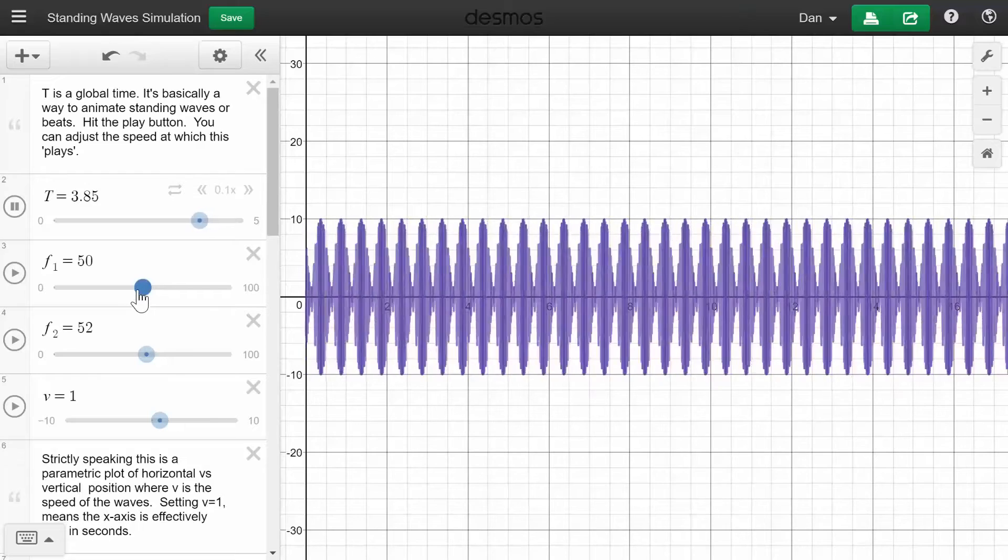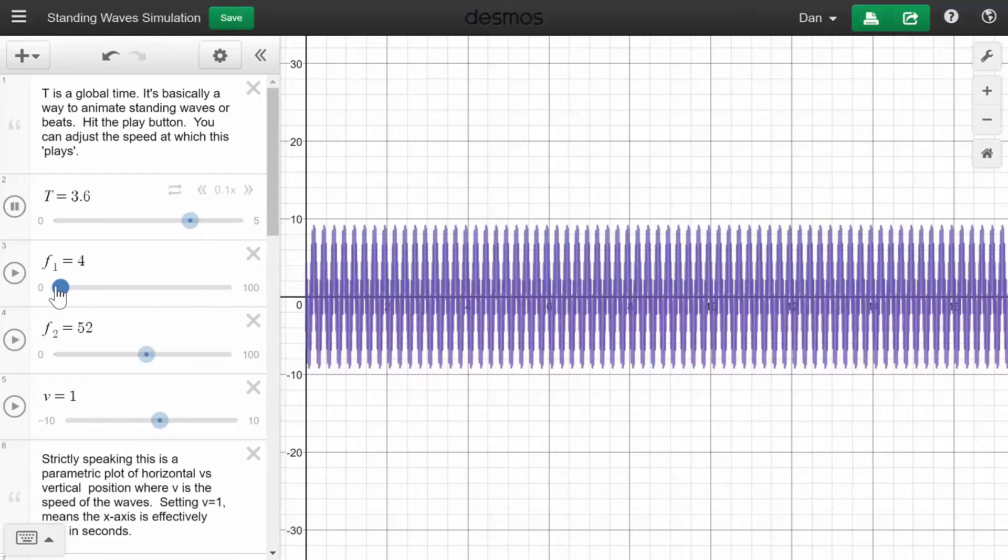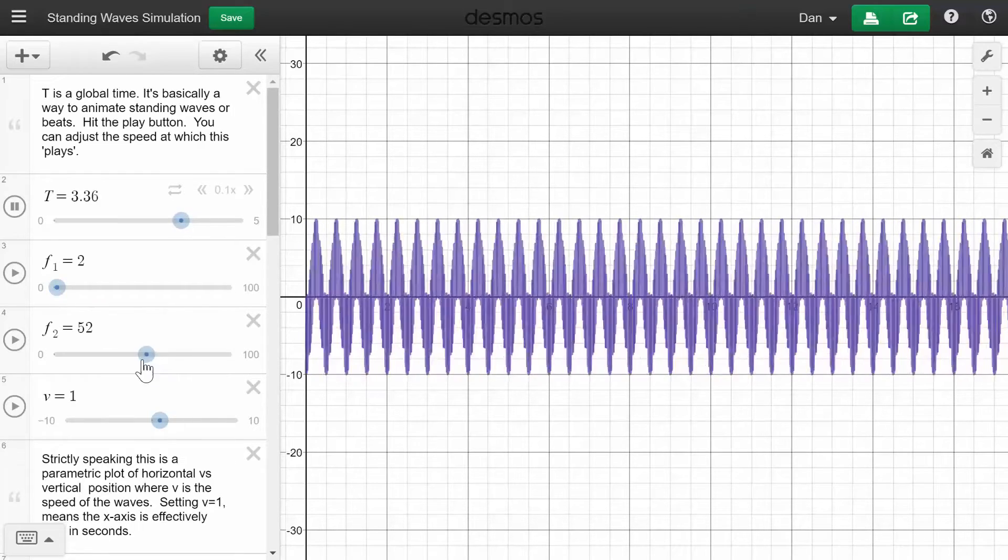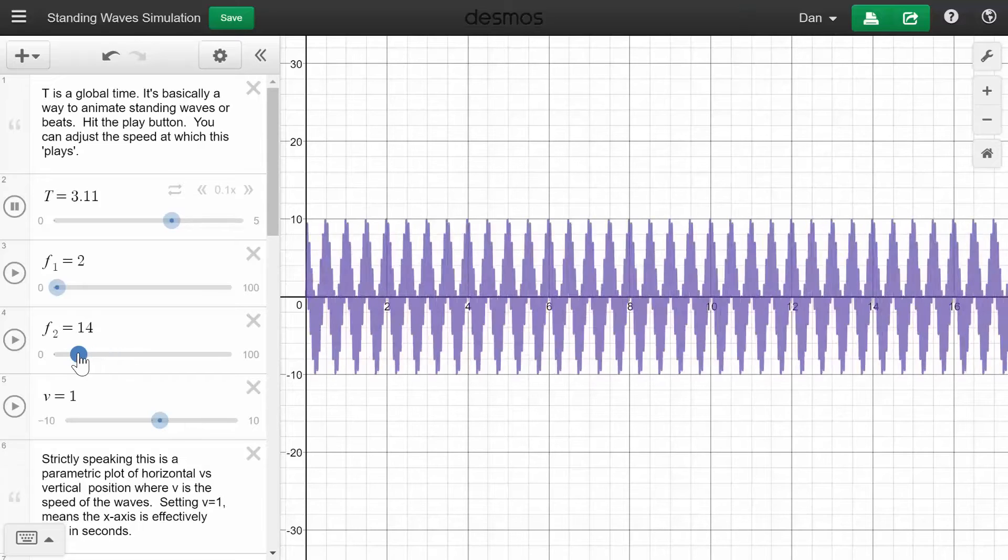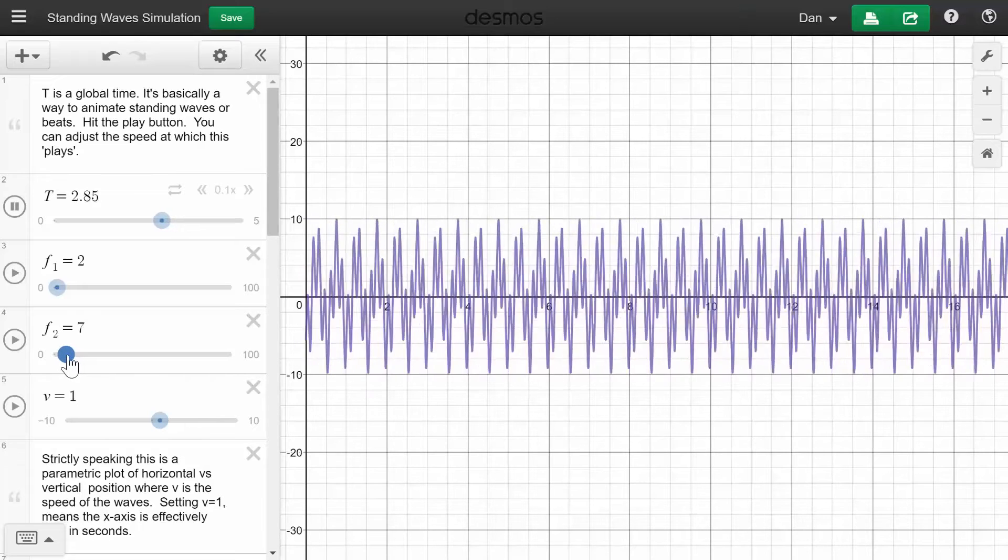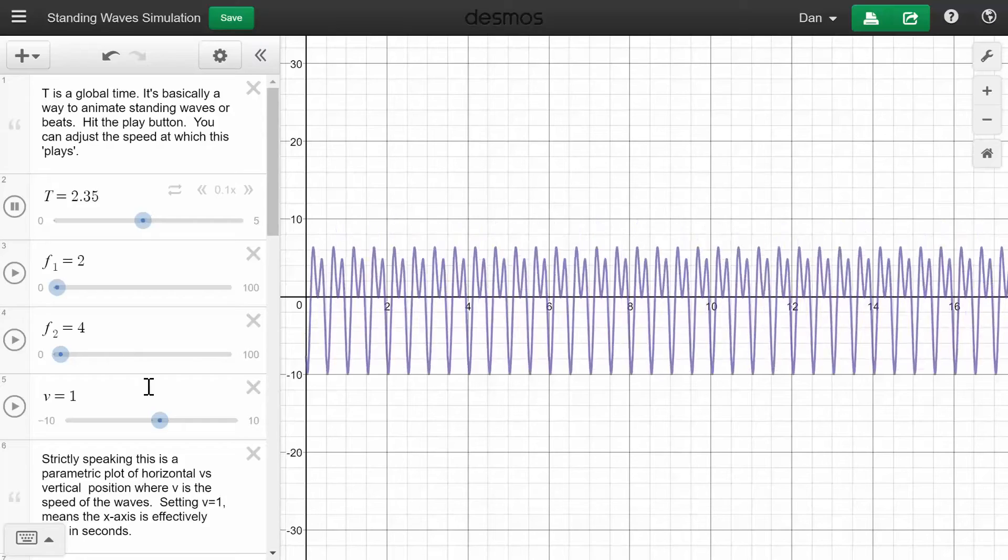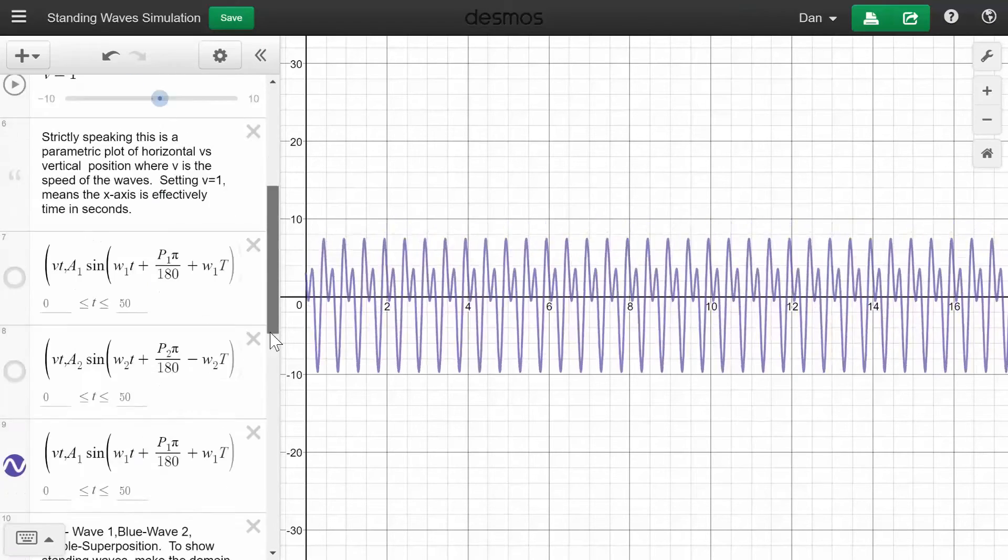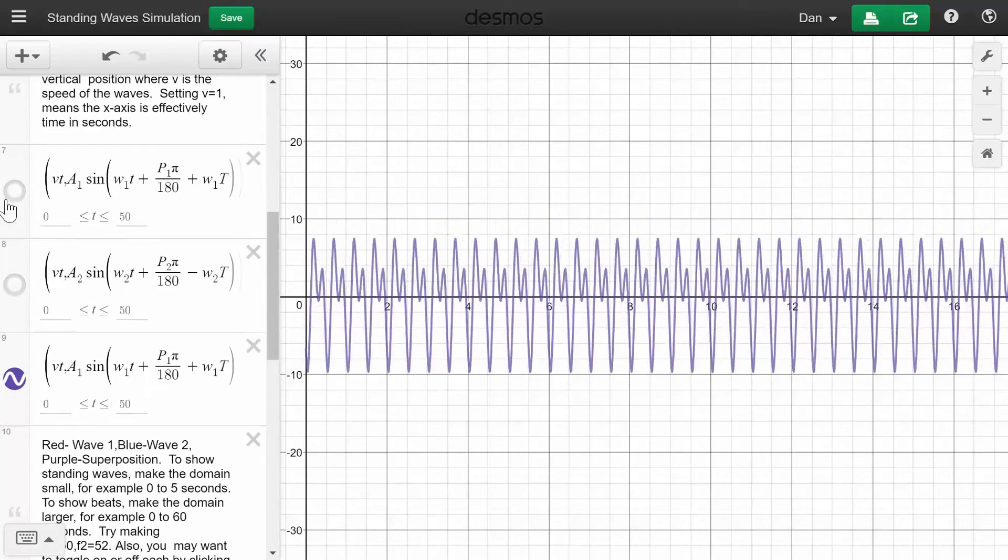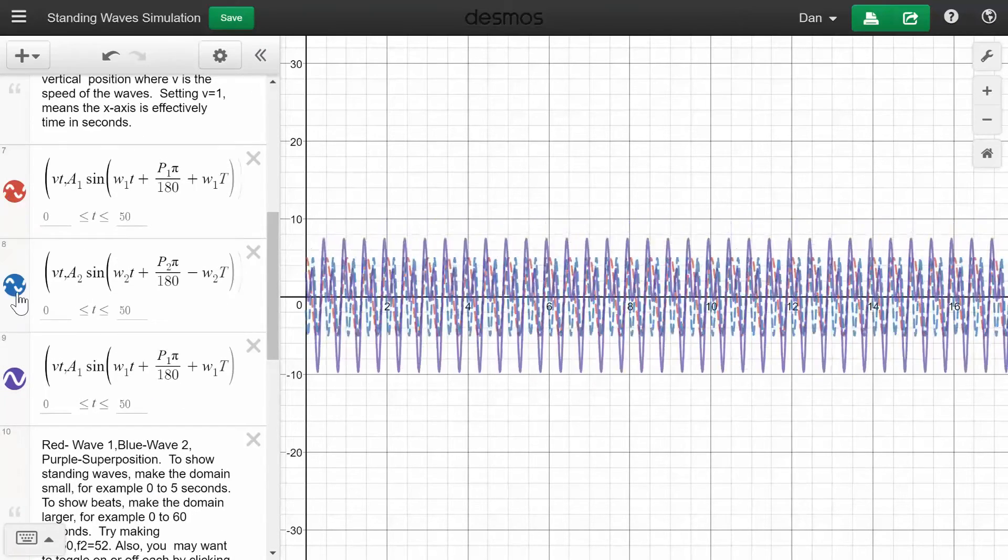Or we can look at what if we didn't have such high frequencies. What if we had different frequencies, but they were just lower, like 2 and, I don't know, something single digit. You can actually see them going in and out of phase. And if we toggle these on, you can see that.